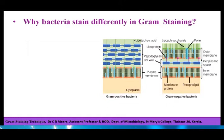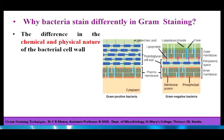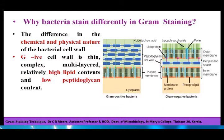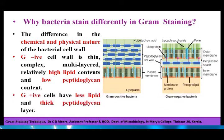Why do bacteria stain differently during Gram staining procedure? The difference in the chemical and physical nature of the bacterial cell wall is responsible for this difference in response to Gram stain. The Gram negative cell wall is thin, complex, multi-layered and contains relatively high lipid content and low peptidoglycan content. Gram positive cells have less lipid and a thick peptidoglycan layer.